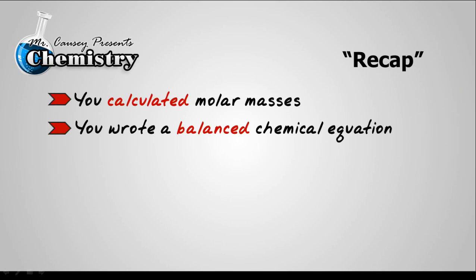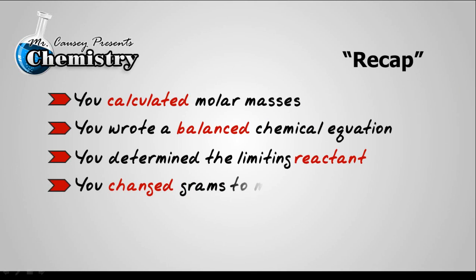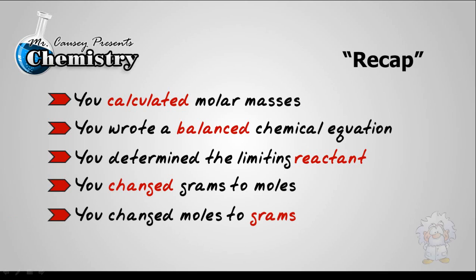Alright, recap. You calculated molar mass. You wrote a balanced chemical equation. You determined the limiting reactant. You then used that limiting reactant and you changed grams of reactants to moles and then you changed the moles to grams for our final product answer.